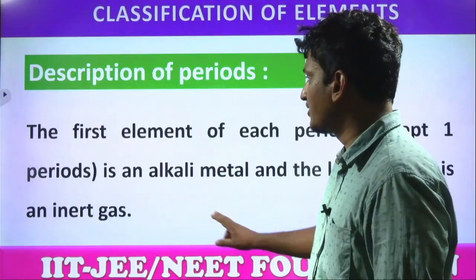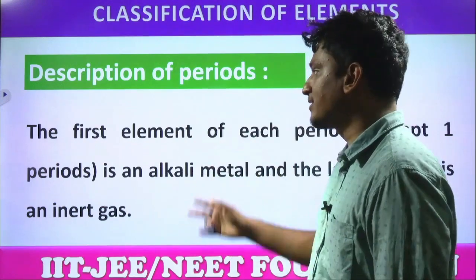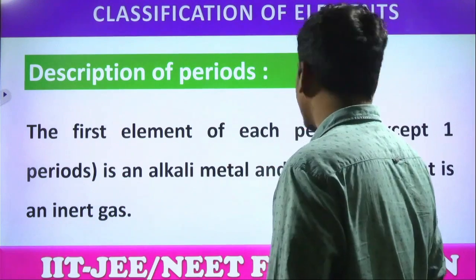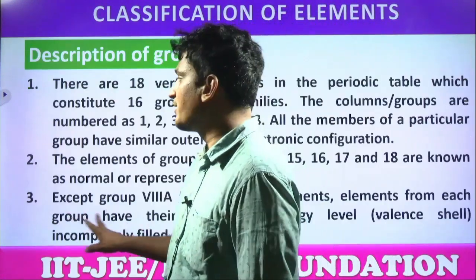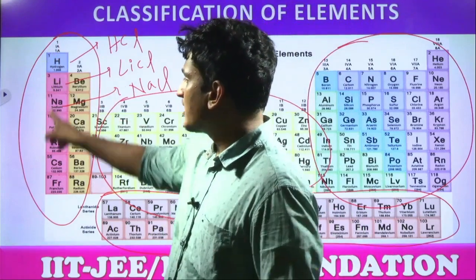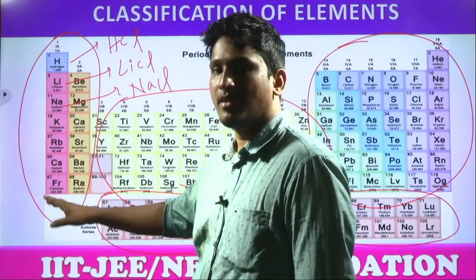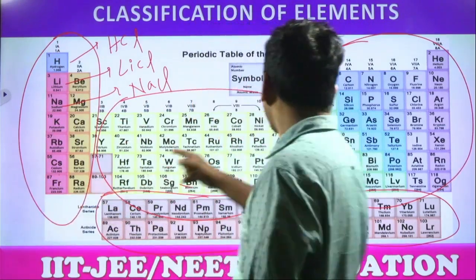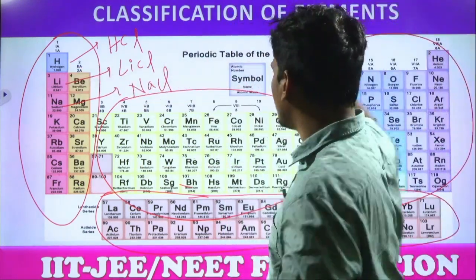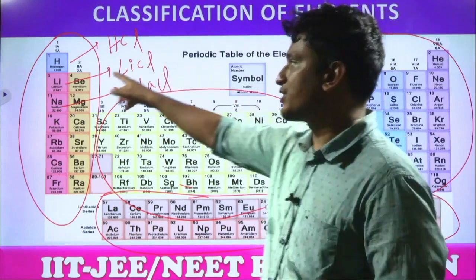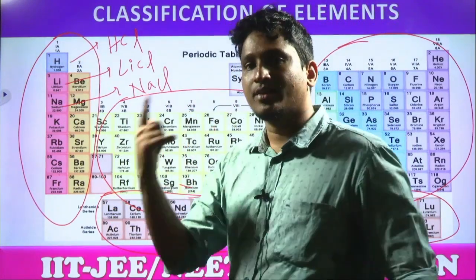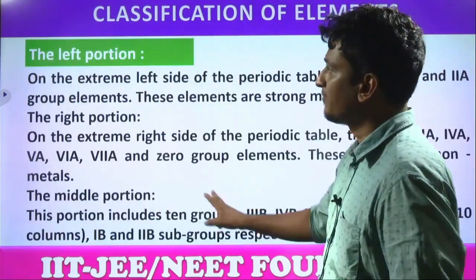Next, description of periods. The first element of each period — except the first period — is an alkali metal, and the last element in the period is an inert gas. Looking at the first element in each period: it comes under the first group, called alkali metals. The last element in each period is an inert gas. Except for the first period — hydrogen is not an alkali metal; it is a non-metal placed there based on its electronic configuration.